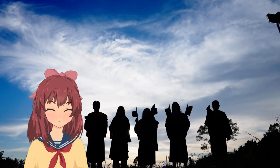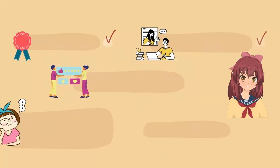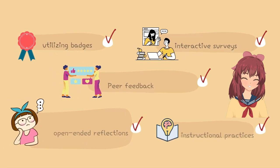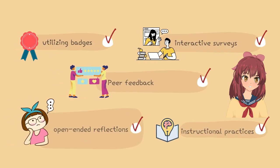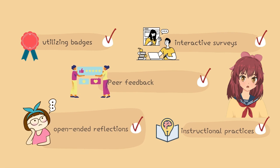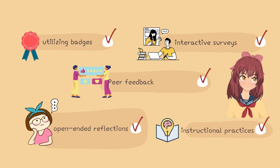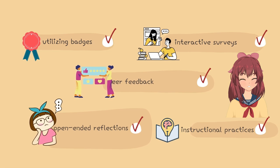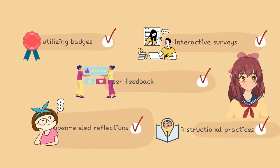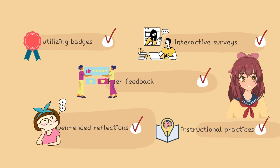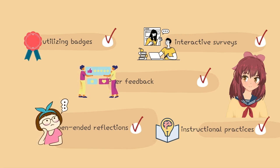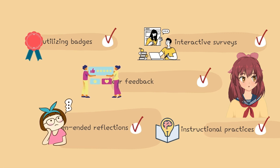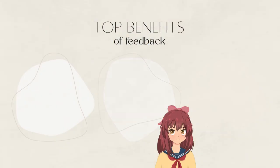In summary, collecting effective feedback in e-assessment is crucial for student engagement and learning. By implementing strategies such as utilizing badges, interactive surveys, peer feedback, and open-ended reflections, you create an environment that values students' inputs and promotes continuous improvement.